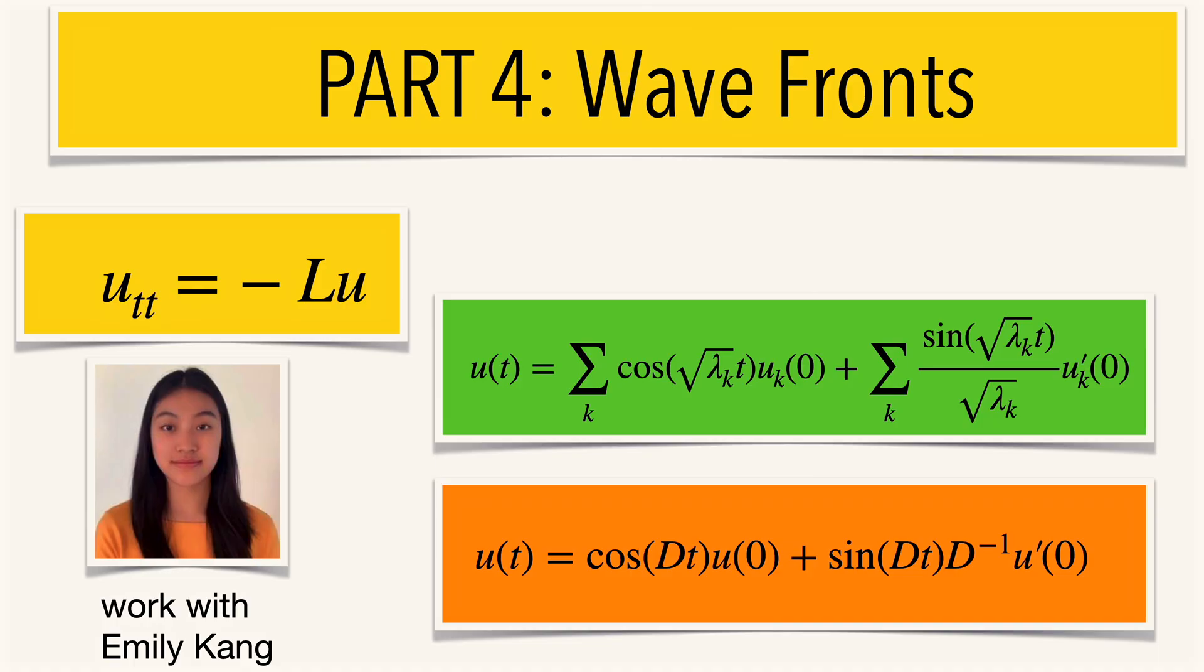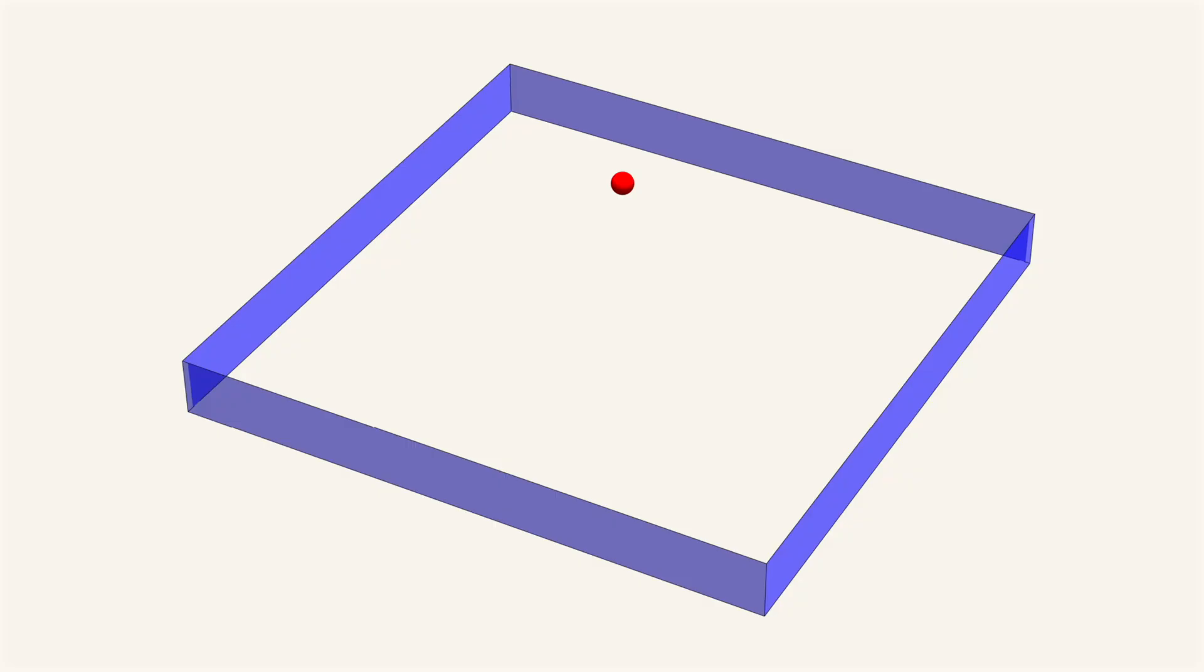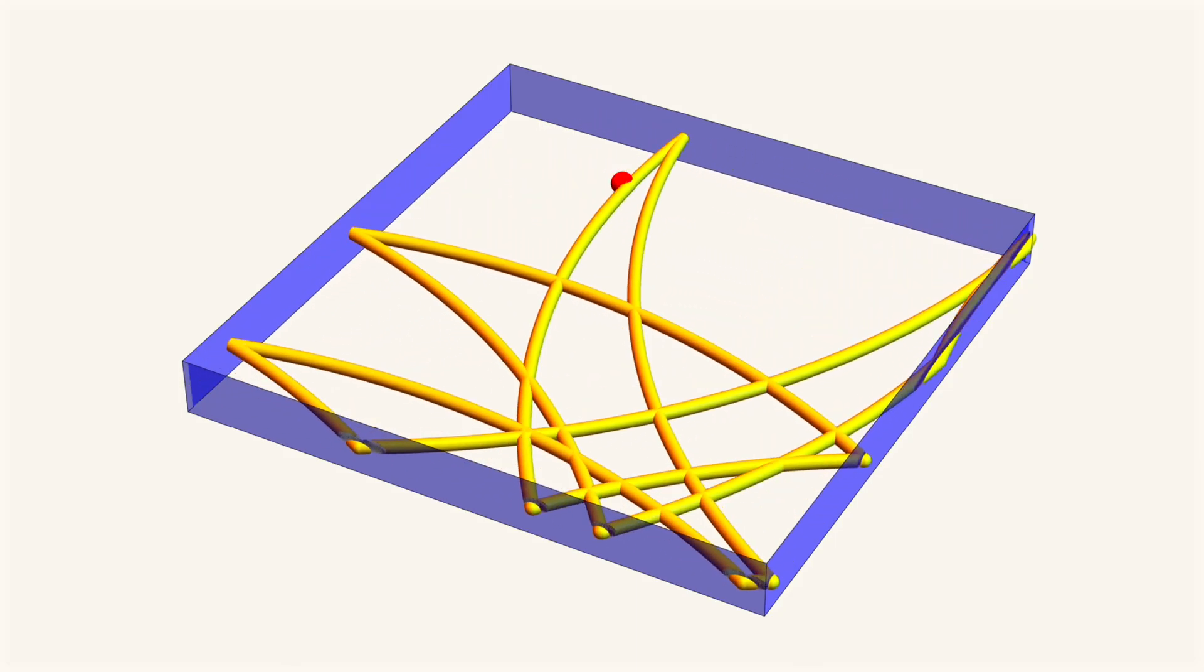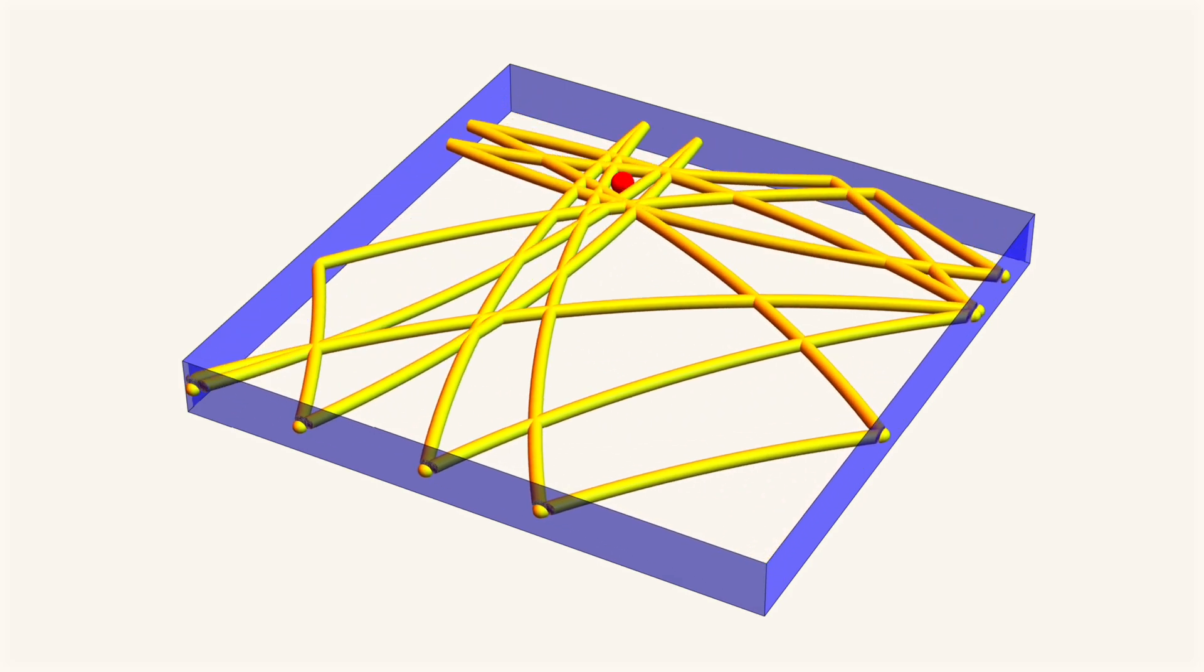In part four, I want to talk about wave fronts, especially about work done with Emily Kahn in the case of flat structures, like if you are in a rectangle and you let light flow, then you have a wave front, and this wave front becomes complicated with time.